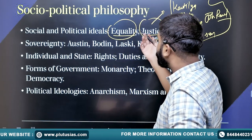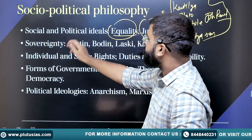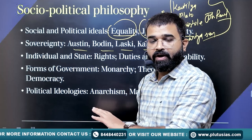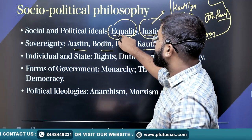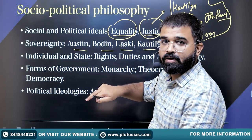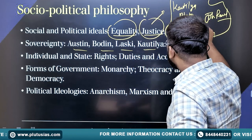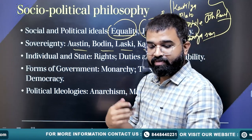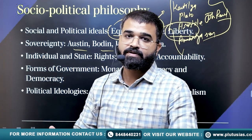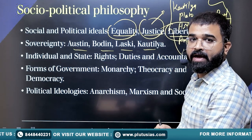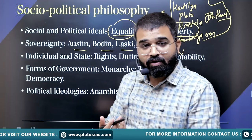This is the trick in philosophy: whenever a question is asked on any philosopher or concept — like in sovereignty where Austin, Borden, Lasky, and Kautilya are already mentioned — but for equality or liberty, the relevant thinkers are not directly named in the syllabus. So we bring these philosophers into our discussion, and in this way we will get good marks.